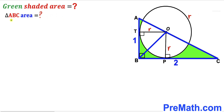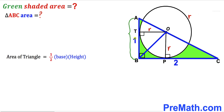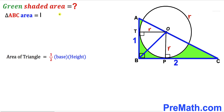Now we calculate the area of the big triangle ABC. Recalling the area of a triangle formula: area equals one-half times base times height. In our case the base of this right triangle is two units and the height is one unit. So the area of triangle ABC equals one-half times two times one, which gives us one square unit.